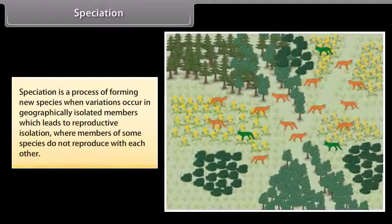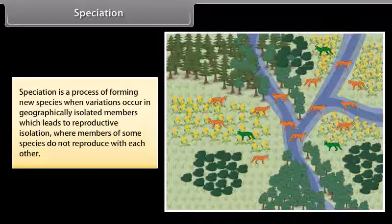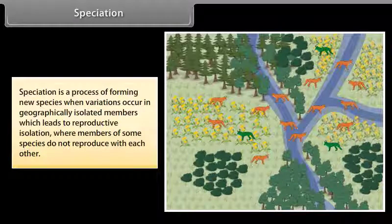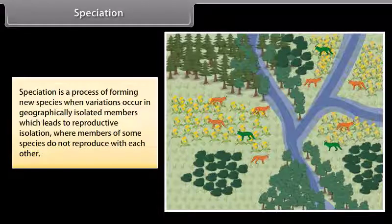Speciation is a process of forming new species when variations occur in geographically isolated members which leads to reproductive isolation where members of some species do not reproduce with each other.